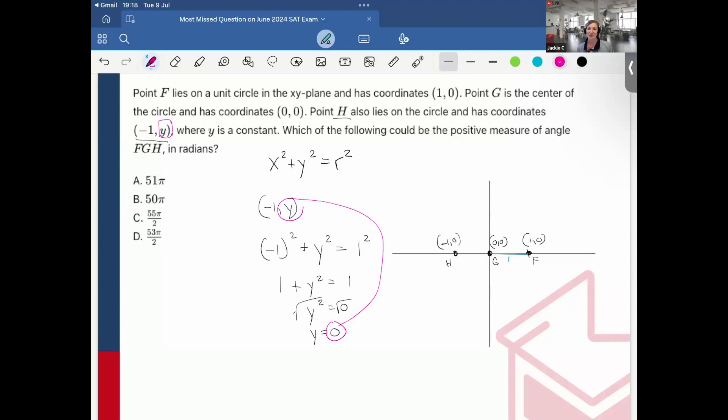Okay, and then I'm asked for which of the following could be the positive measure of angle FGH. So this would be this angle here, which it's a straight line, so therefore it's 180 degrees. And in radians, 180 degrees is π.